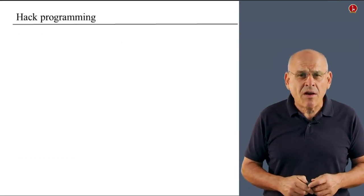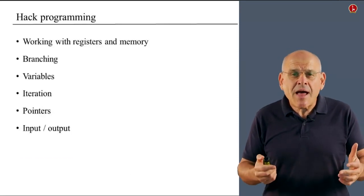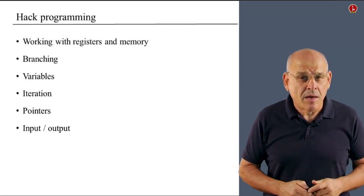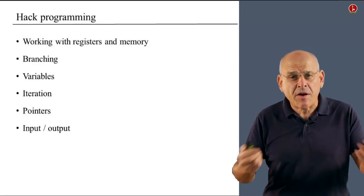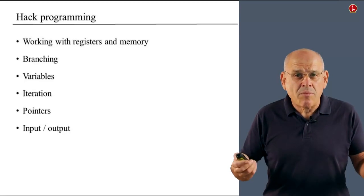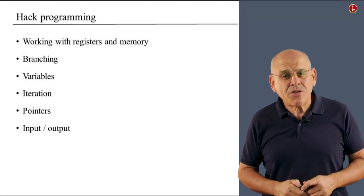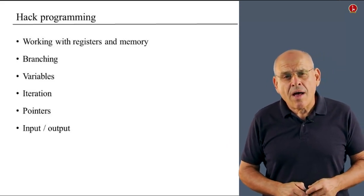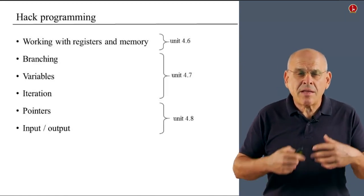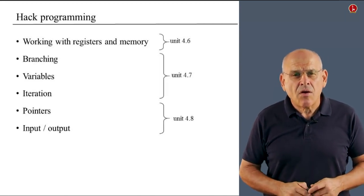All right, so moving along, what do we mean when we talk about low-level programming? Well, surprisingly enough, we mean a whole bunch of issues that you find in any programming language: things like working with memory and variables and branching, iteration, pointers, input and output. These idioms are widely used in any programming language, and the Hack machine language is no exception. So in this unit, we'll begin to talk about registers and memory. And in subsequent units, we'll talk about the other subjects, which are slightly more advanced.